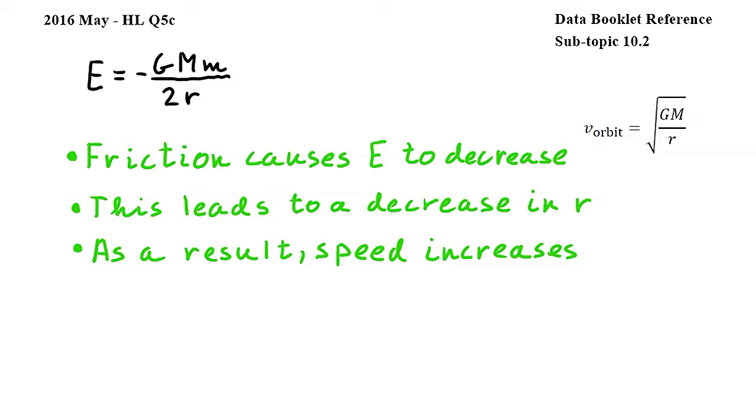If you consider the equation given in the question for E, you will notice that since capital G, capital M, and lowercase m remain constant while the energy decreases, R, the orbital radius, will also decrease.